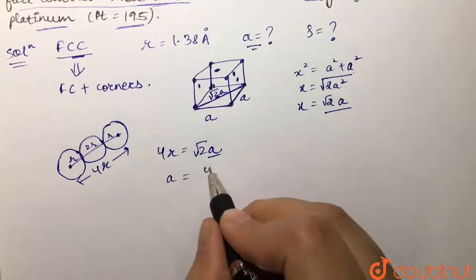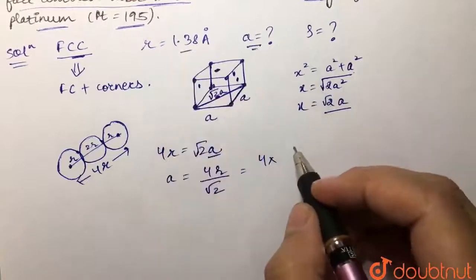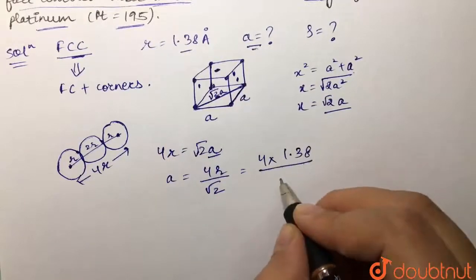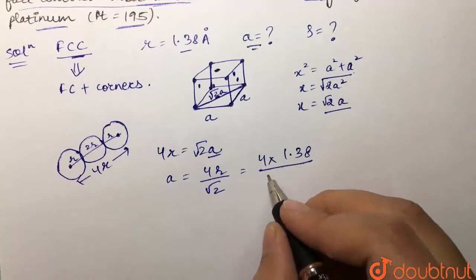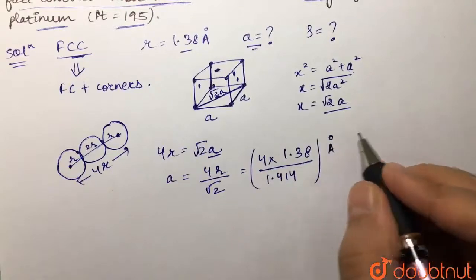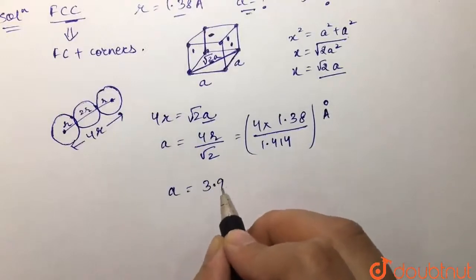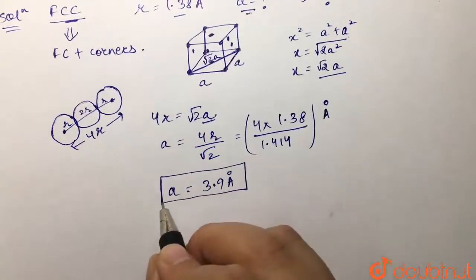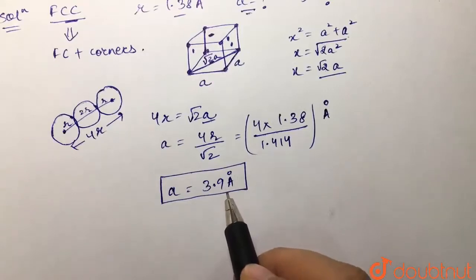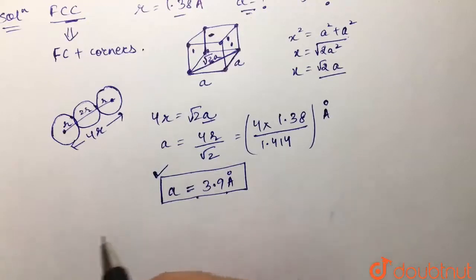From 4r = √2·a, we get a = 4r/√2. With r = 1.38 angstrom and √2 = 1.414, we solve: a = (4 × 1.38)/1.414 = 3.9 angstrom. So the edge length of the unit cell is 3.9 angstrom — that is the answer to part one.